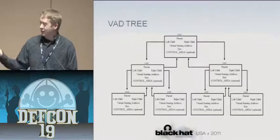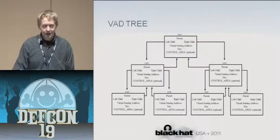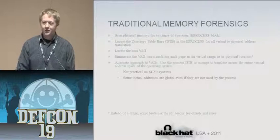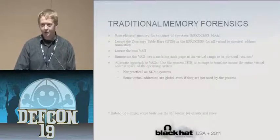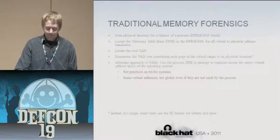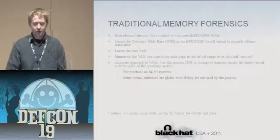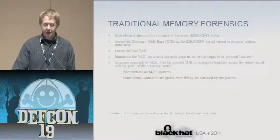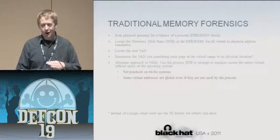Here's a representation of a typical VAD tree. It starts with a VAD root, and each VAD contains information about the virtual addresses of the process. Traditionally, you would scan physical memory for an EPROCESS block, which tells you a process is at that location. From there you get the directory table base, or DTB, in the EPROCESS, which helps you translate from virtual to physical addresses. You then locate the root of the VAD tree, step through it, translate virtual addresses to physical, take the starting address and size, and grab all the data in between.